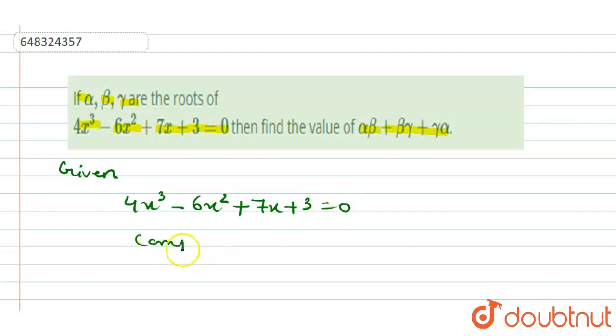We will compare this equation with the general equation. The general equation is ax³ + bx² + cx + d = 0.